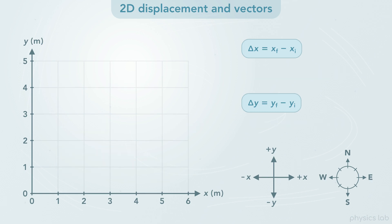What if the stone moved from a position of 5,4 to a position of 1,1? The y component, delta y, would still be negative 3 meters. But now the x component, delta x, would be 1 meter minus 5 meters, which is negative 4 meters.